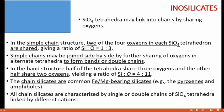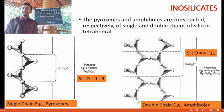The chain silicates are common iron-magnesium bearing silicates. The common examples include pyroxenes, which are single chain silicates, and amphibole, which forms an example for double chain silicates. All chain silicates are characterized by single or double chains of SiO4 tetrahedra linked by different cations.